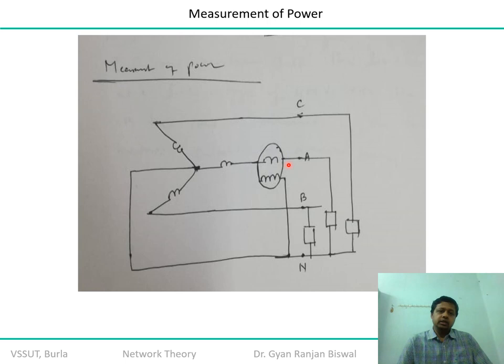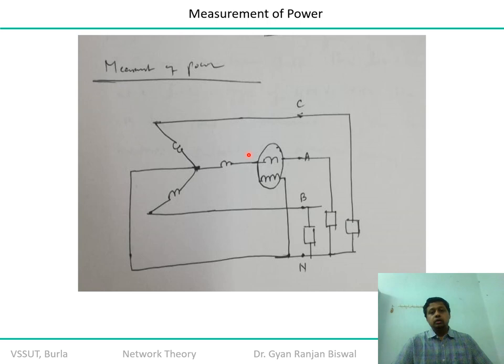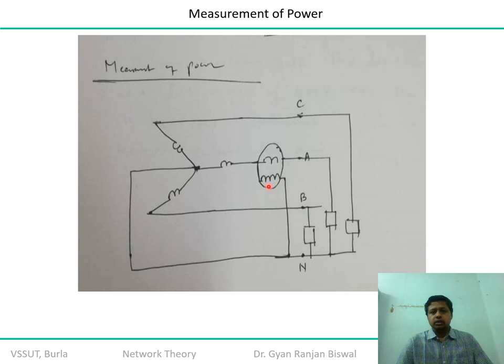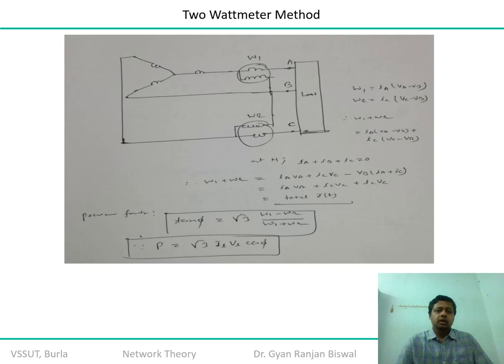The coil dedicated to measuring current should have fewer turns, because a higher number of turns generates more loss. The potential coil requires a larger number of turns to hold the required potential, and the current penetration through it will be less. The wattmeter is connected through a particular phase and to the load, so you get the real value of current and voltage, giving you the real value of power.